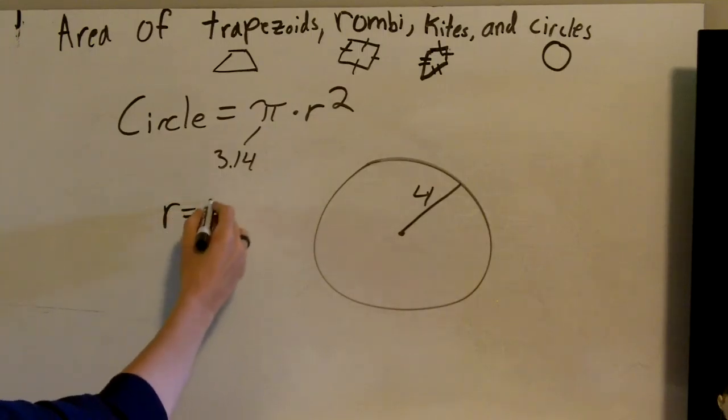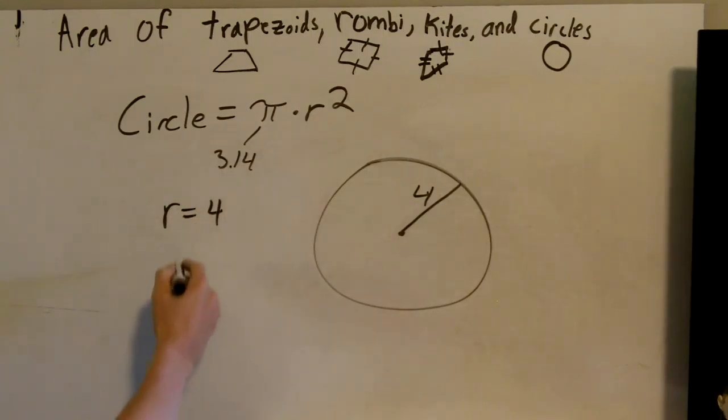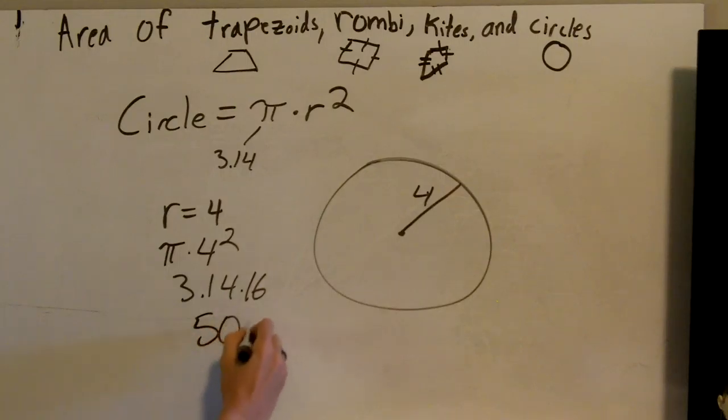We know our radius is 4 since it's half the distance. So I'm just going to do pi times 4 squared, or 3.14 times 16. I'm going to put that into a calculator. 3.14 times 16 is 50.24. There's my answer.